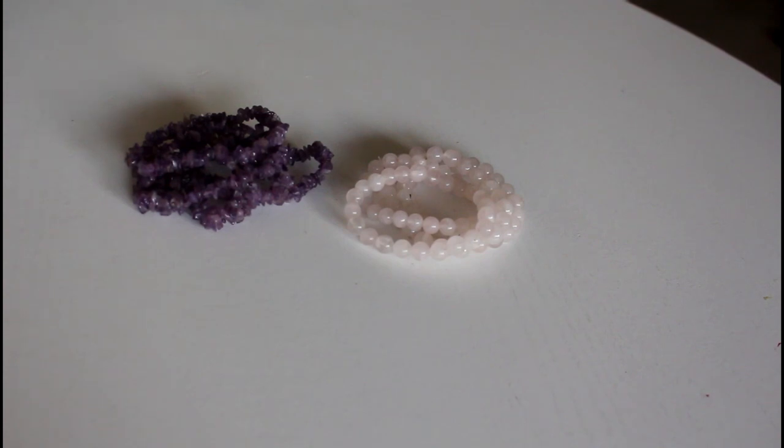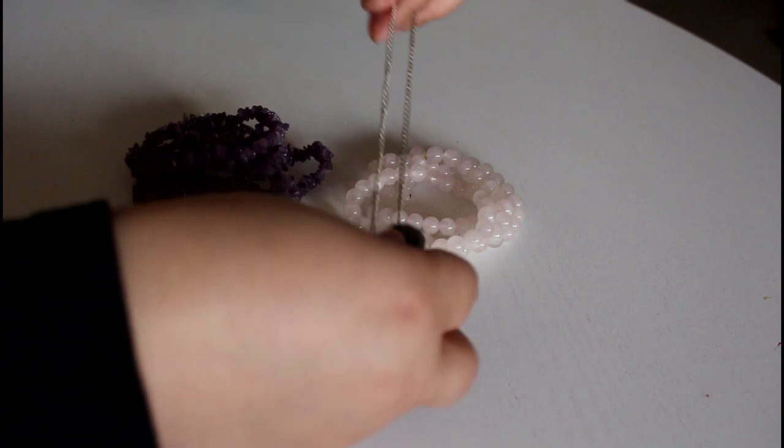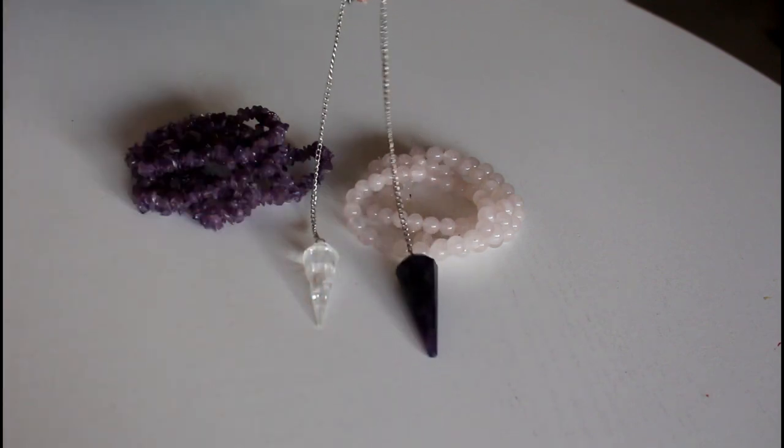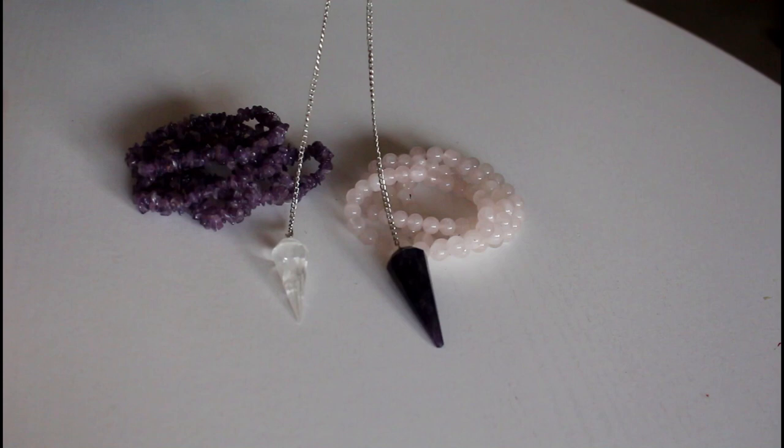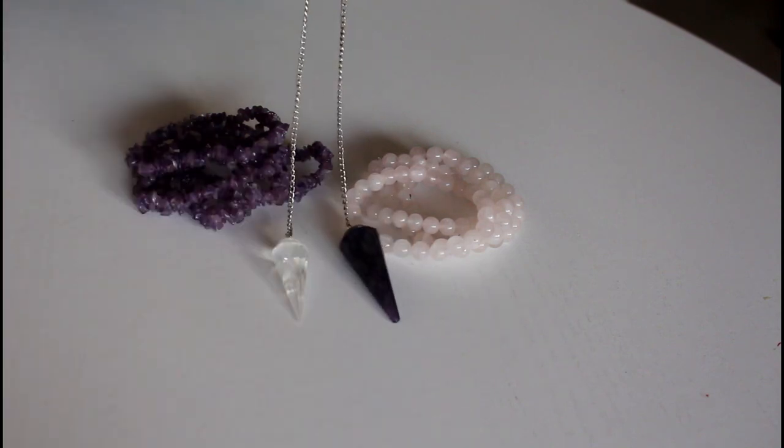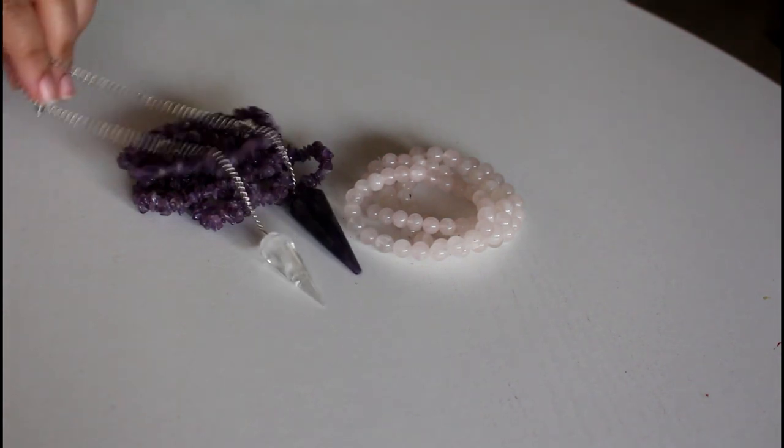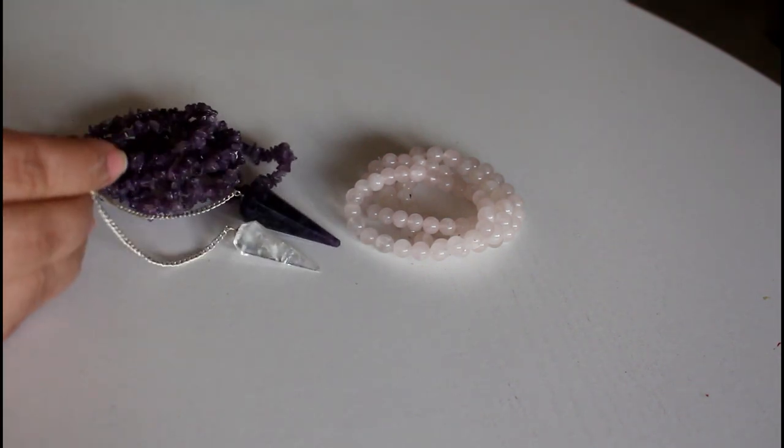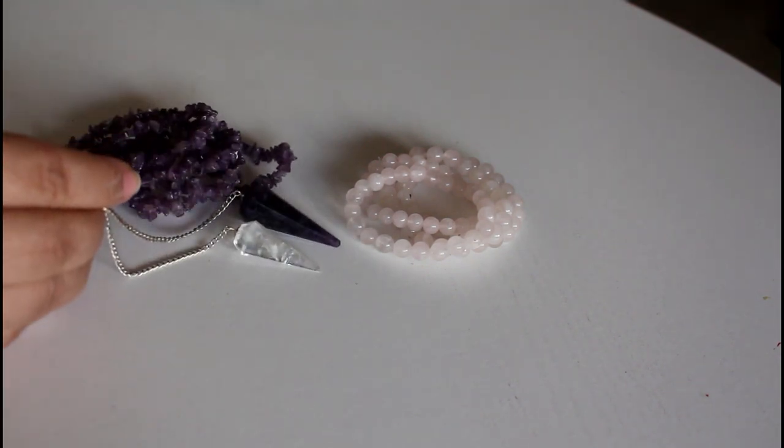You can find them in rings or necklaces or in shapes of pendulums. Of course, there are so many other shapes like skulls, like geodes, or totems. There's a lot of them. These are just some of them to introduce them to you.